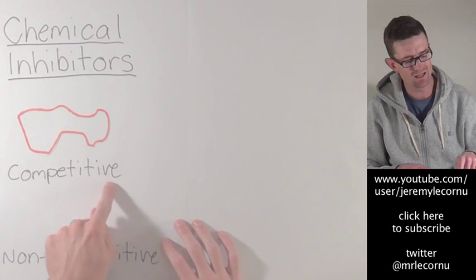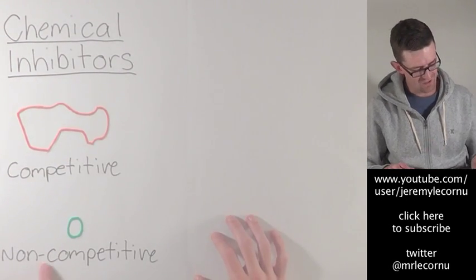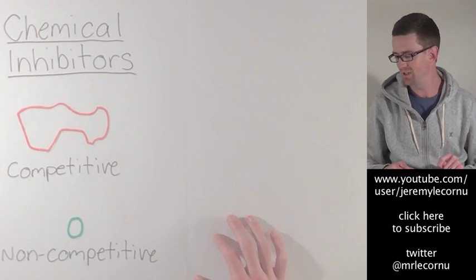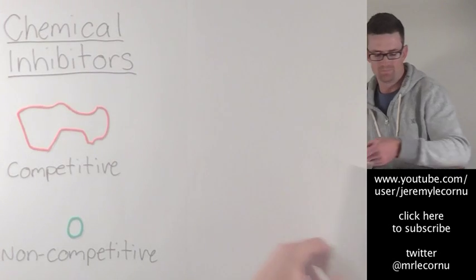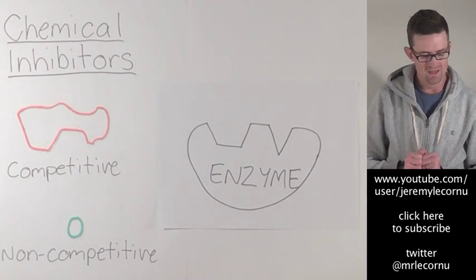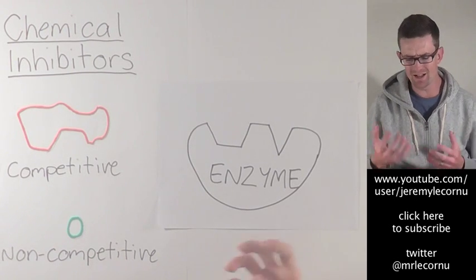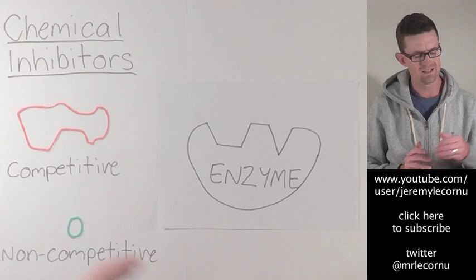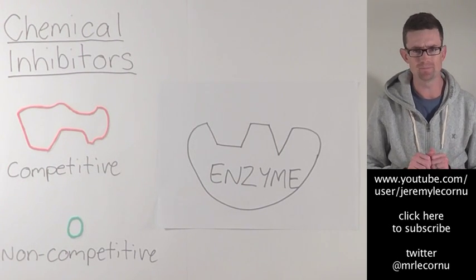There's competitive inhibitors — I've got an example here — and non-competitive inhibitors, the example is here. I'm going to bring back the enzyme, and I want you to look at the shape of these two and start to think about maybe formulating something in your mind as to what these terms might mean.